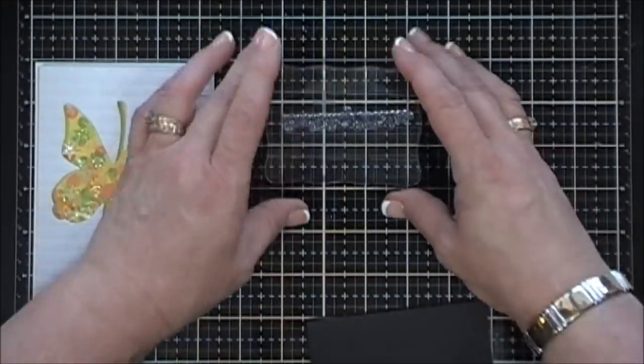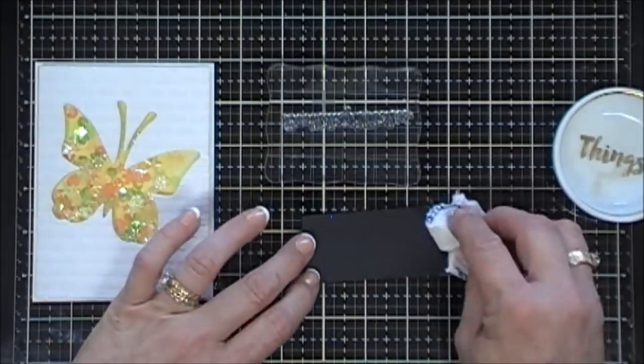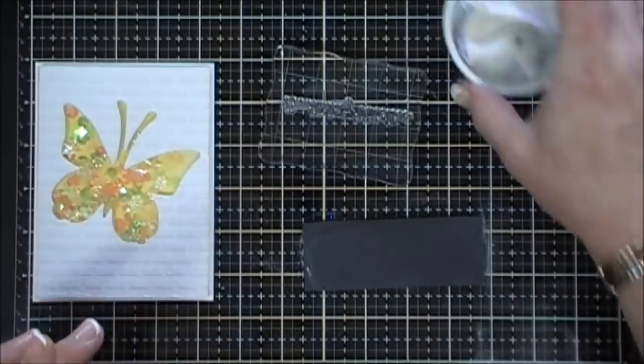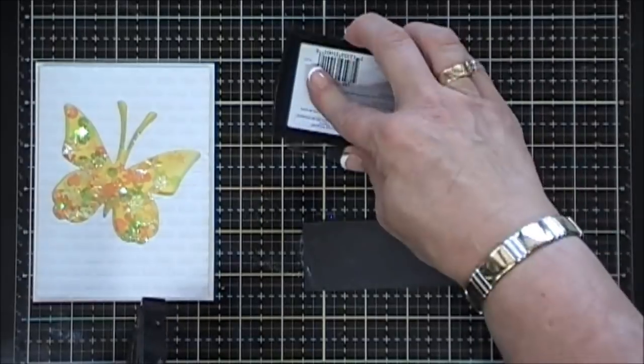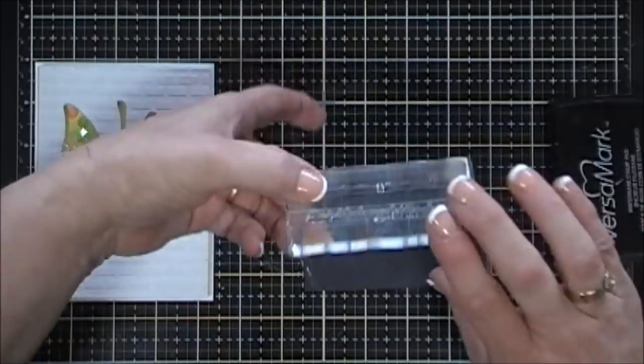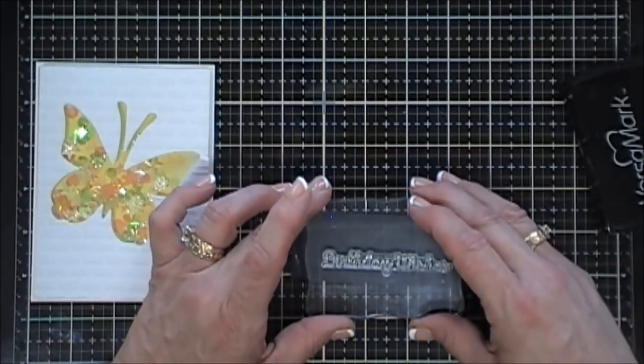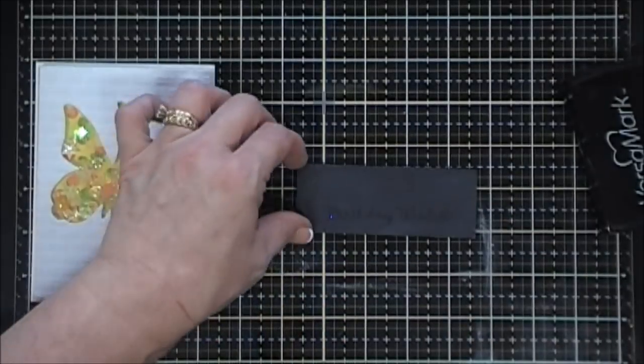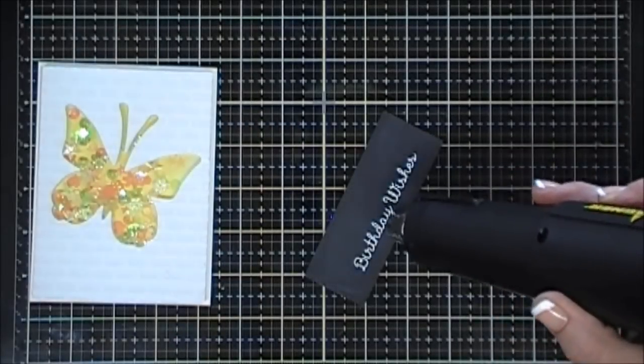Now for my sentiment, I'm using the butterfly stamp set from Queen & Co. Everything that I use today I'll leave links below in the description area. But using my anti-static powder tool on some black cardstock, I'm going to ink up the happy birthday sentiment and stamp it with my Versamark ink, and then I went ahead and added white embossing powder.